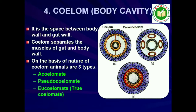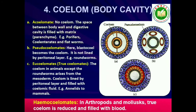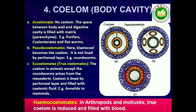4. Coelom. Presence or absence of a cavity between the body wall and the gut wall is very important in classification. The body cavity which is lined by mesoderm is called coelom. Animals possessing coelom are called coelomates, for example, annelids, mollusks, arthropods, echinoderms, hemichordates and chordates. In some animals, the body cavity is not lined by mesoderm; instead the mesoderm is present as scattered pouches in between the ectoderm and endoderm. Such a body cavity is called pseudocoelom and the animals possessing them are called pseudocoelomates, for example, aschelminthes. Animals in which the body cavity is absent are called acoelomates, for example, Platyhelminthes.